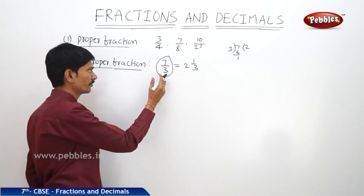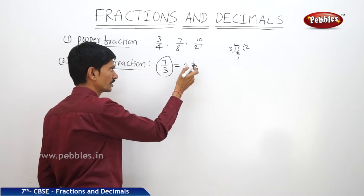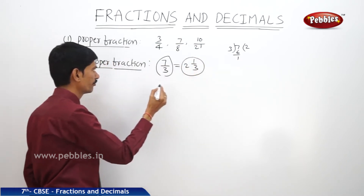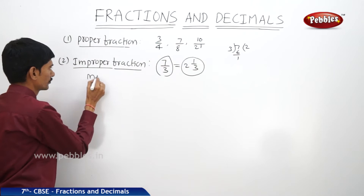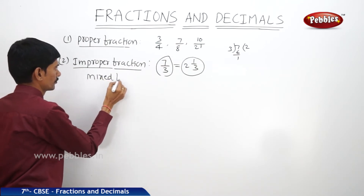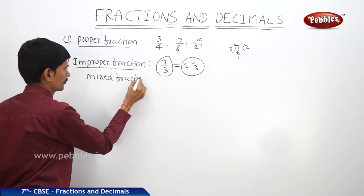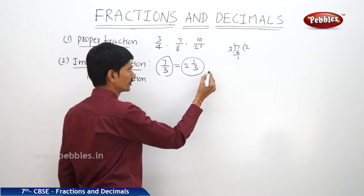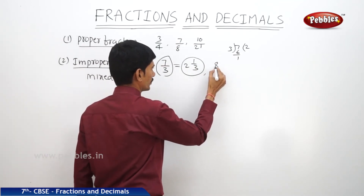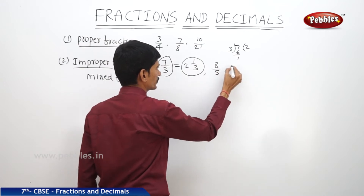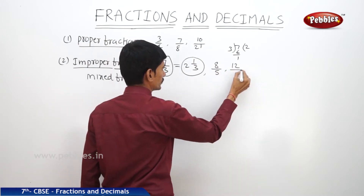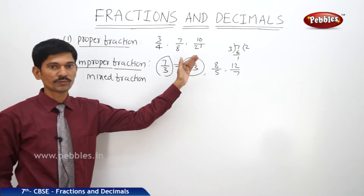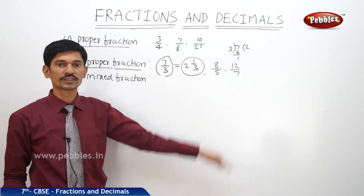Every improper fraction can also be written as a mixed fraction. Other examples include 8/5 and 12/7. In all improper fractions, the numerator is greater than the denominator.